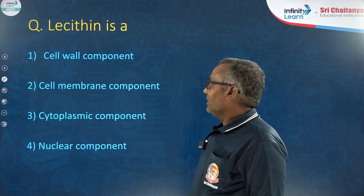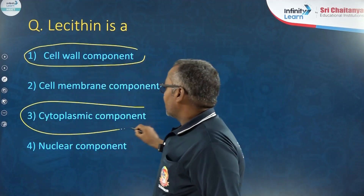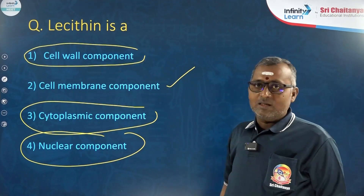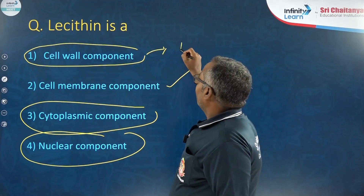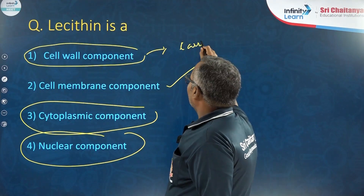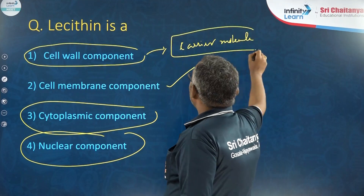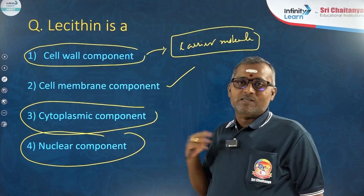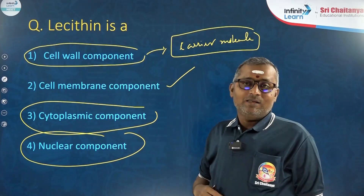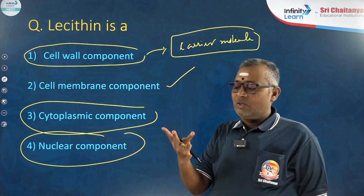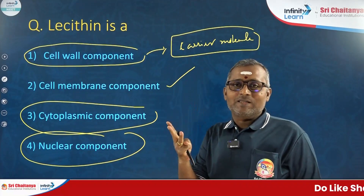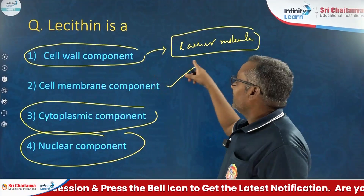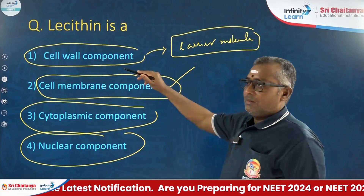Next question: Where is lecithin found? Lecithin is not a cell wall component, nor a cytoplasmic or nuclear component. It is a component of the cell membrane, acting as a carrier molecule that helps in transportation of substances across cell membranes. So lecithin is a cell membrane component.